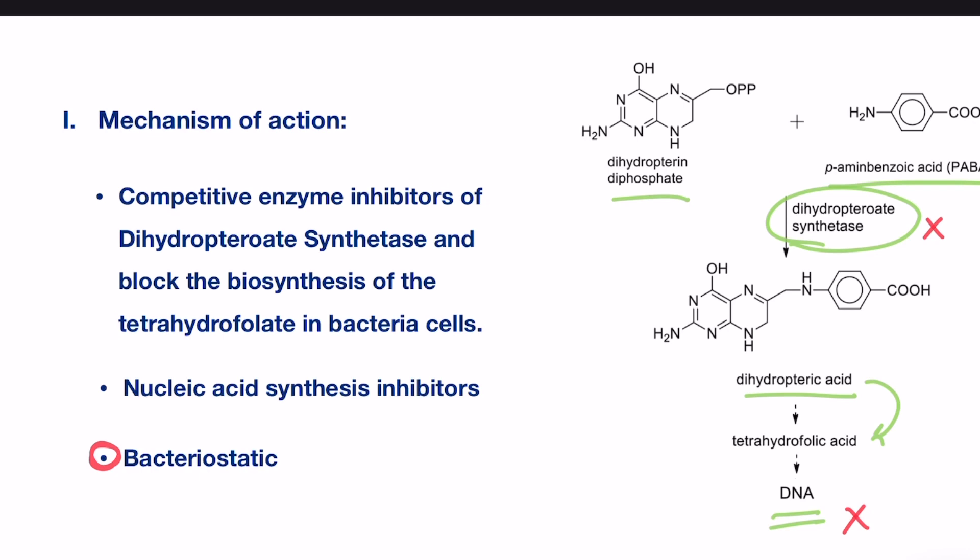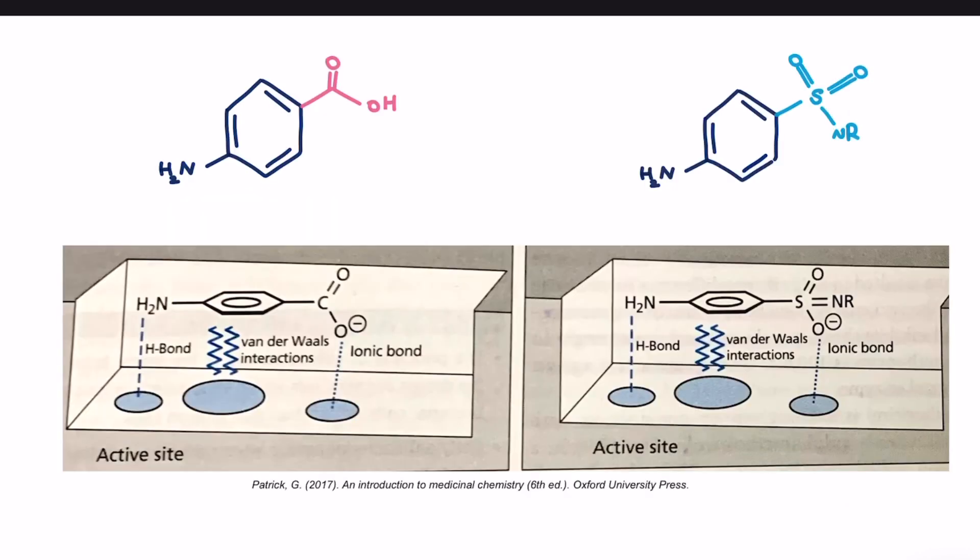Then what makes these drugs able to bind to the enzyme here and prevent this process of forming DNA? The answer lies in the structure of these drugs. Sulfonamide mimic PABA, the natural substrate for the dihydropteroate synthetase.